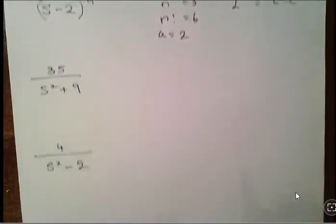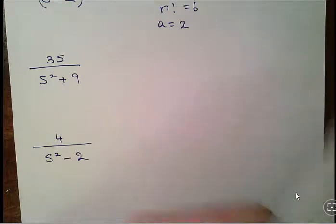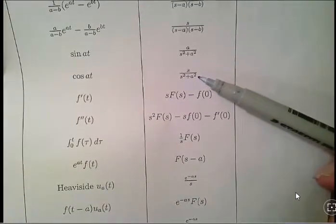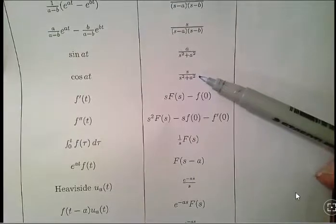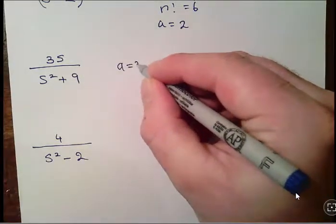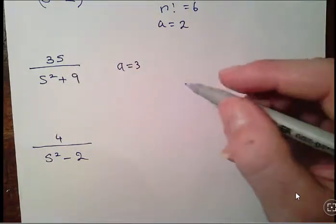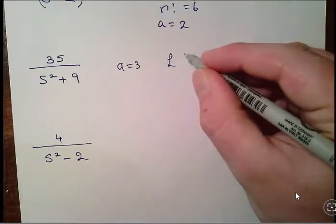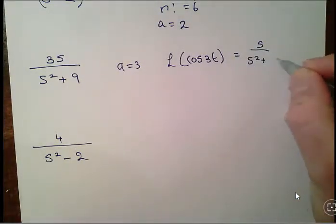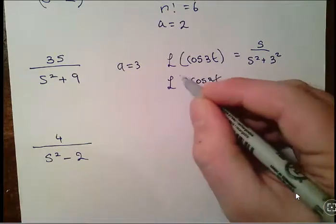Now 3s over s squared plus 9 — this is a bit of a red herring. Let's go back to cos(at): the Laplace transform of cos(at) is s over s squared plus a squared. Here a = 3, so a squared = 9. The 3 in the numerator is just a scalar multiplier, not part of the cosine transform itself. The Laplace transform of cos(3t) is s over s squared plus 9, so the Laplace transform of 3cos(3t) is simply 3 times that.